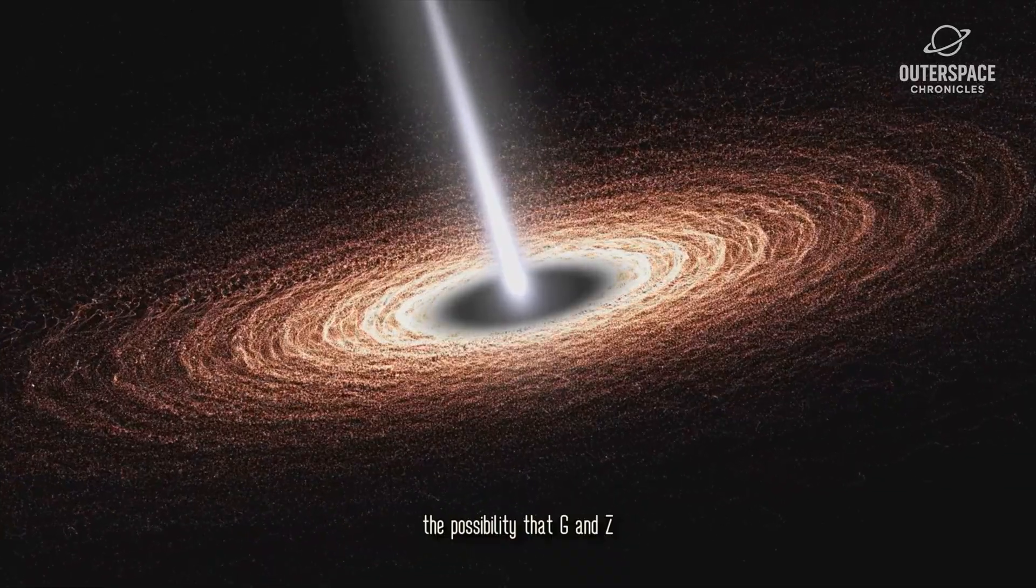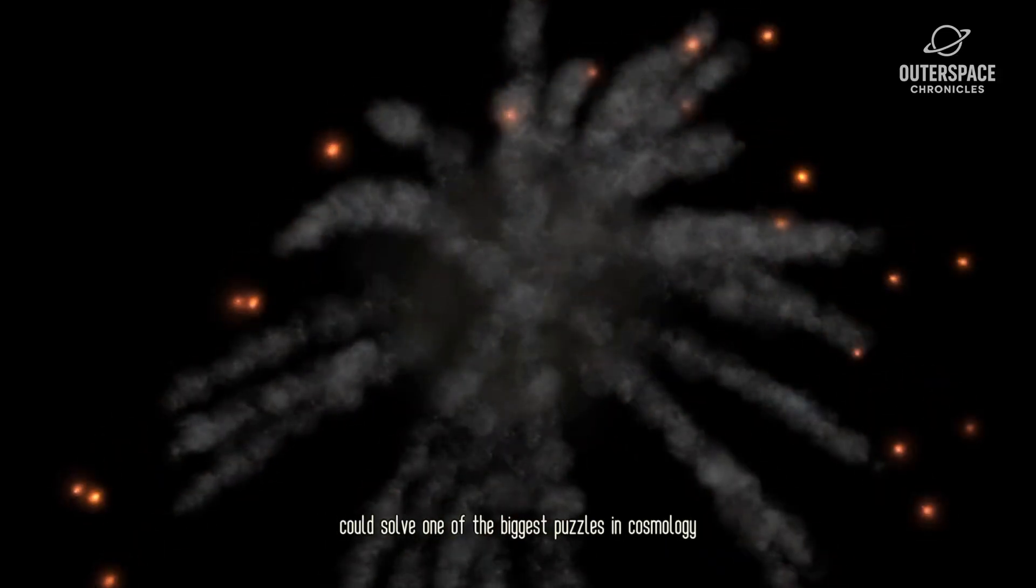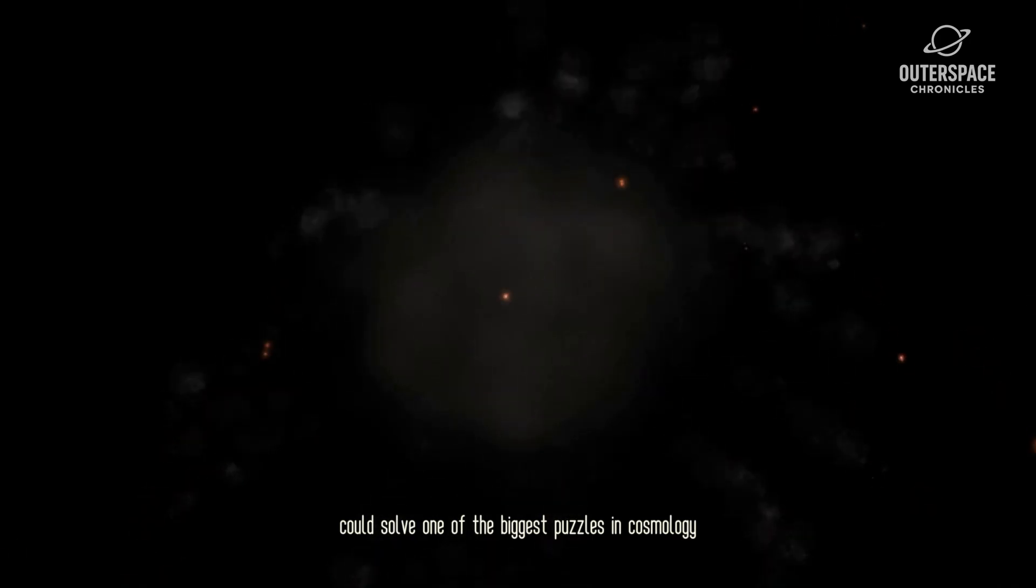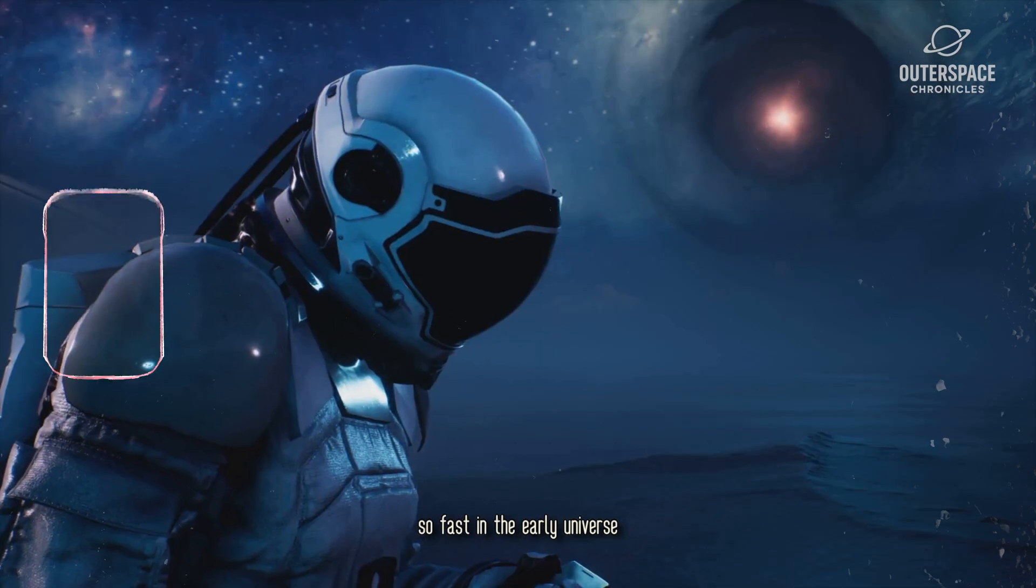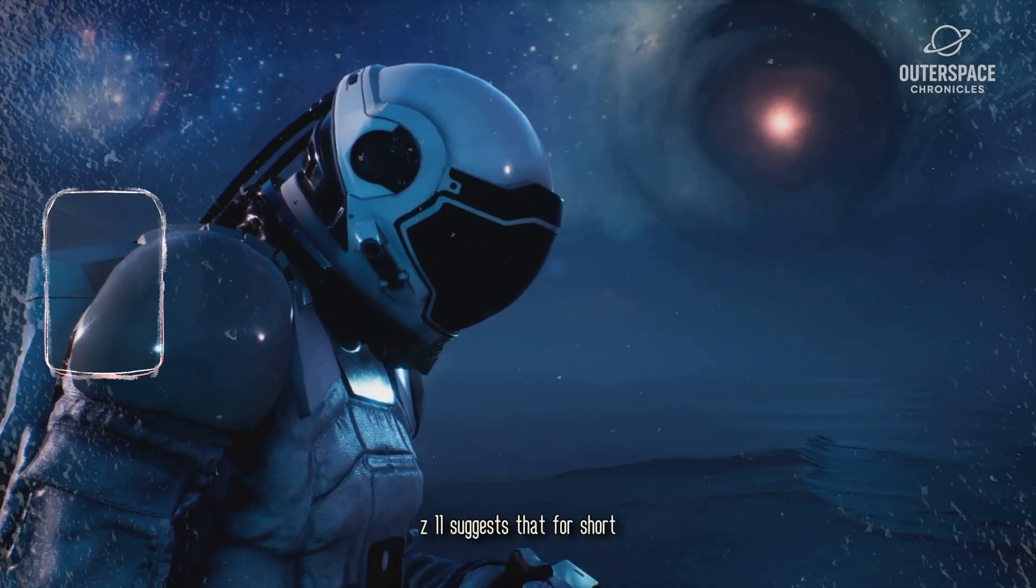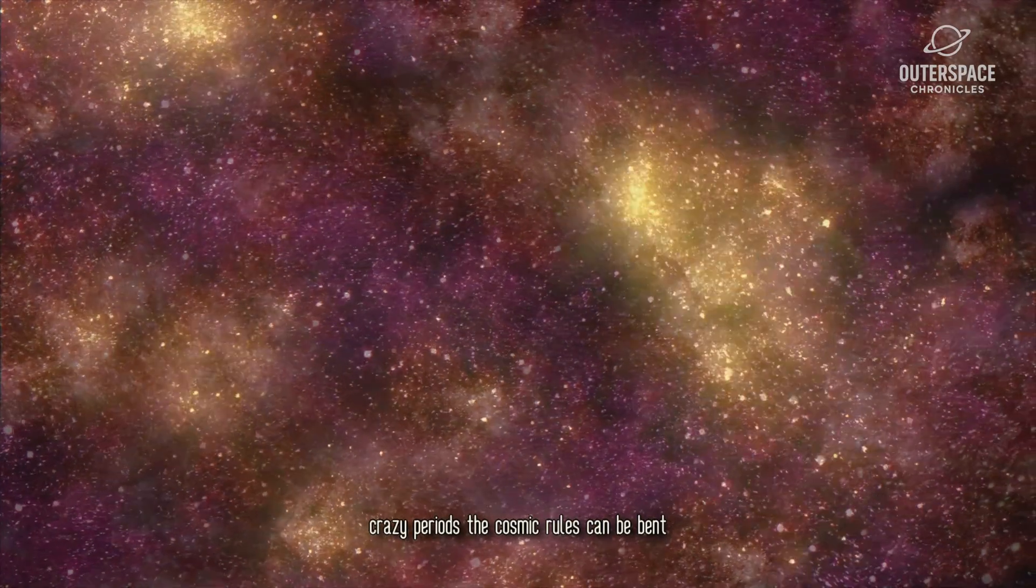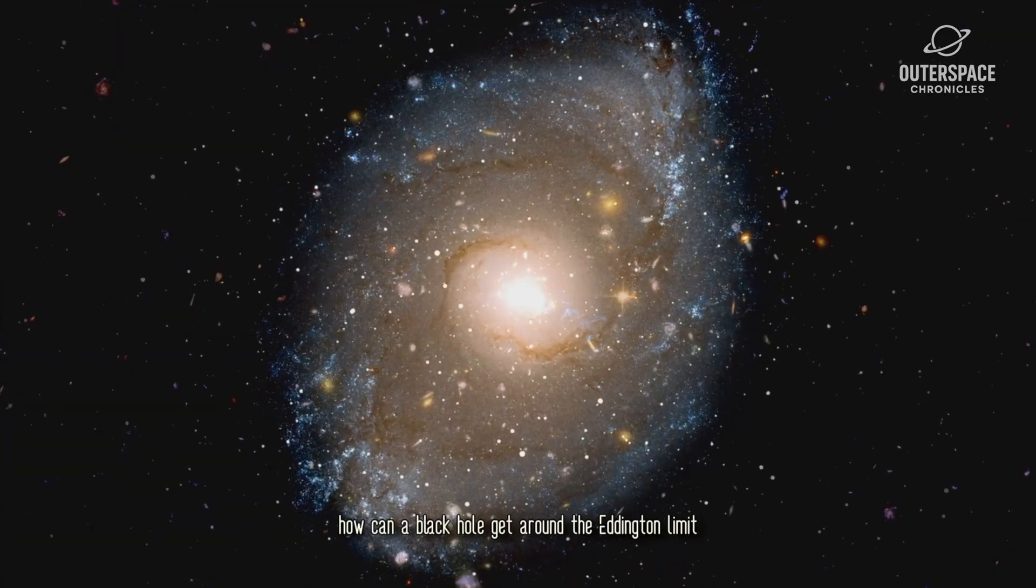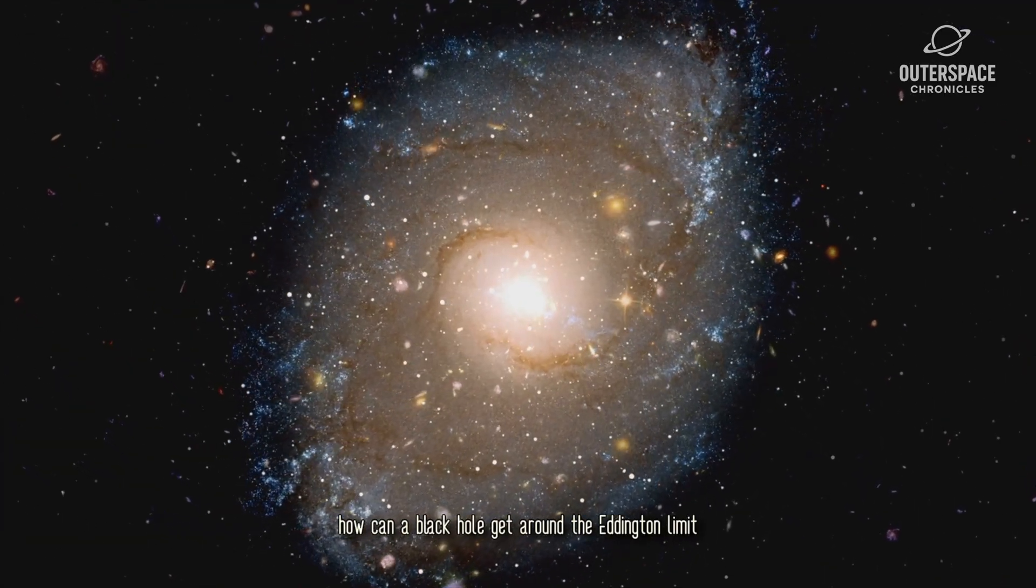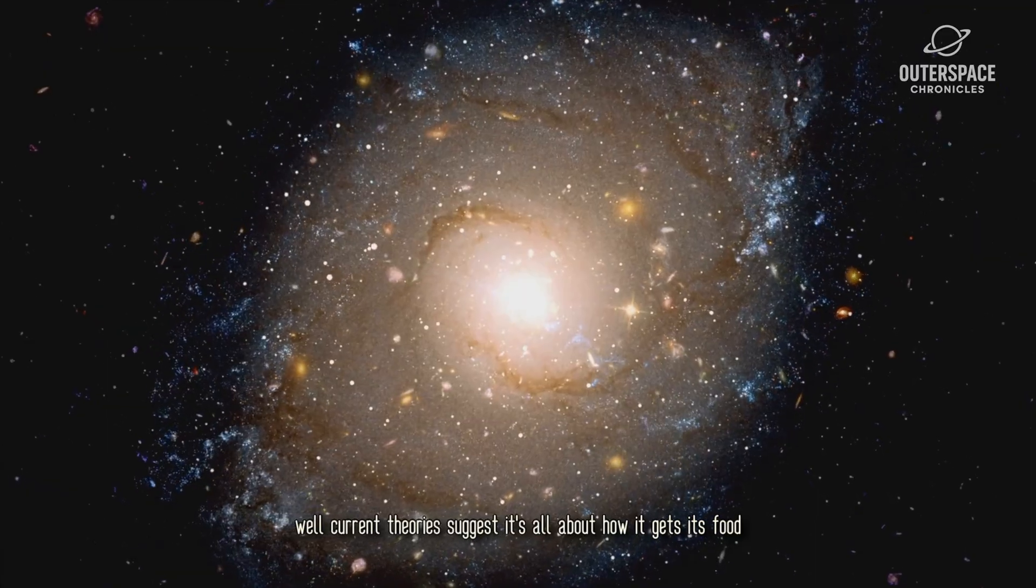The possibility that GNZ11's black hole is undergoing super-Eddington accretion could solve one of the biggest puzzles in cosmology. How did billion solar mass quasars get so big so fast in the early universe? This discovery in GNZ11 suggests that for short, crazy periods, the cosmic rules can be bent. So how does it work? How can a black hole get around the Eddington limit?